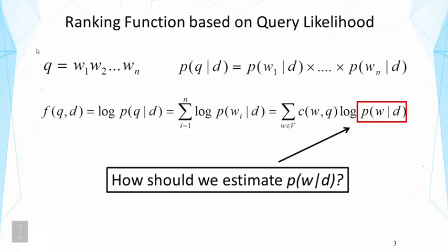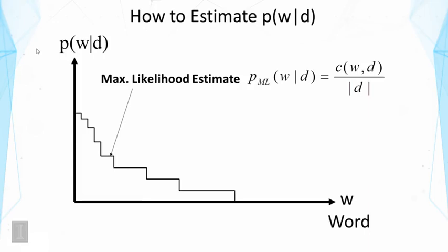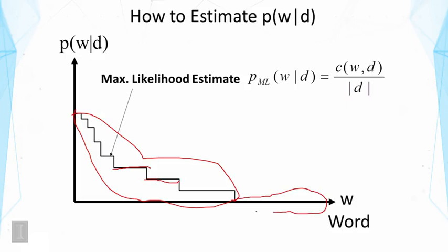So how do we estimate this language model? The obvious choice would be the maximum likelihood estimator, where we normalize the word frequencies in the document. This produces a step function where all words with the same frequency count have identical probability. Note that for words that have not occurred in the document, they all have zero probability.